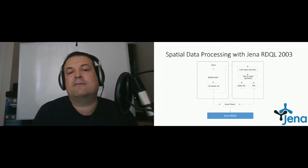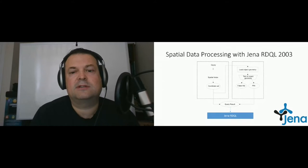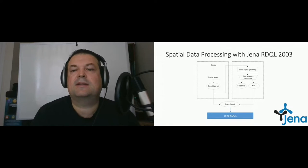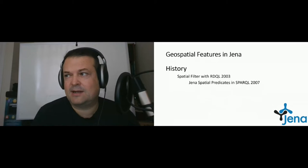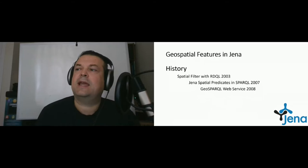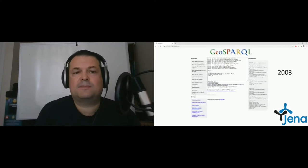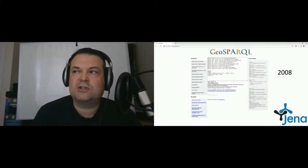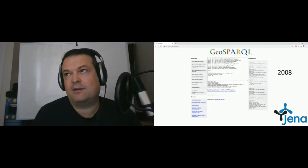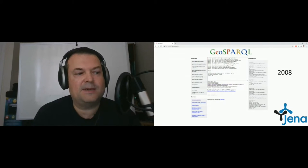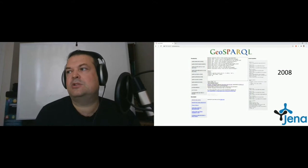In 2007, we introduced so-called magic predicates or property functions that we could use within the SPARQL query language, which allowed us to query for spatial data. Then in 2008, we released a web service called GeoSPARQL — and that causes some confusion today — but it wasn't the GeoSPARQL OGC standard we refer to here. It was just a web service we used to test our geospatial implementation in the Jena project.